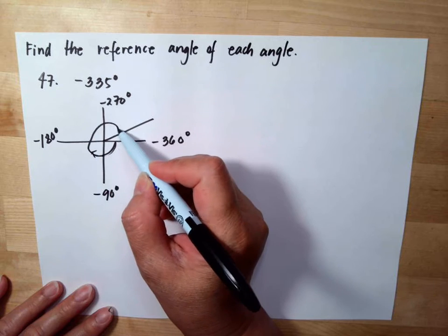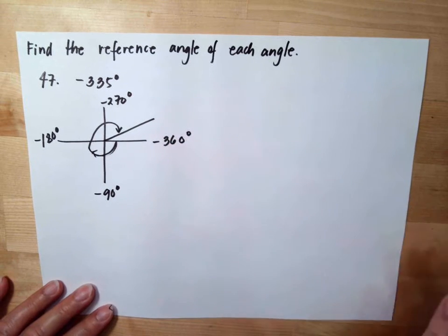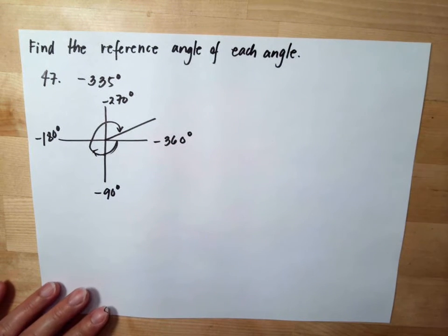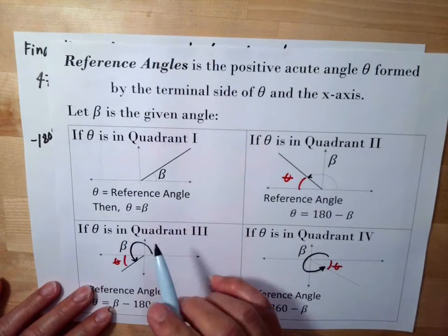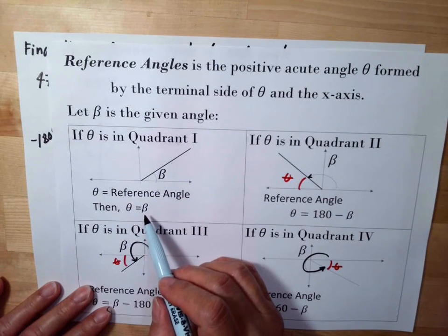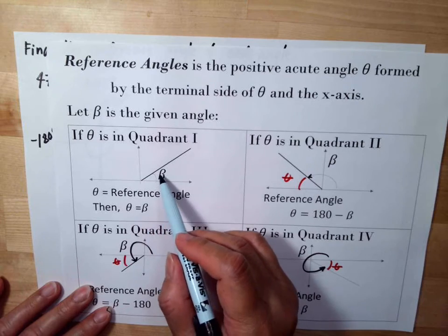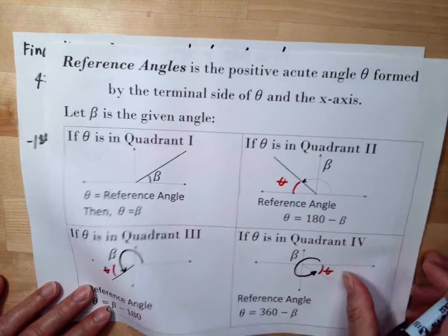So this is our triangle or our angle. Now it ends in the first quadrant, and in the first quadrant we said the reference angle is equal to beta, and this is your beta. So meaning our angle is this, our reference angle.